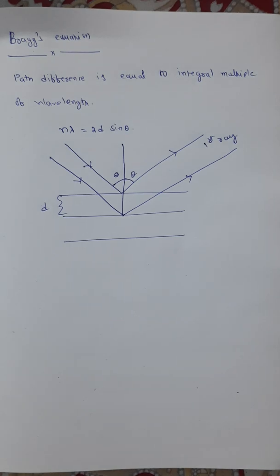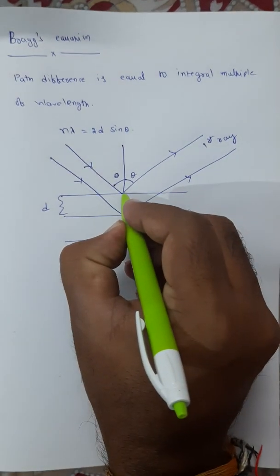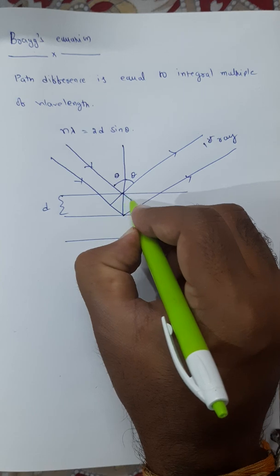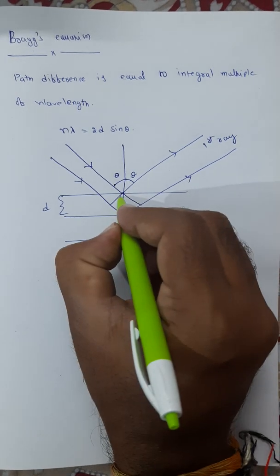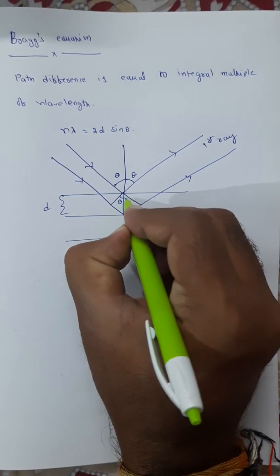Let us draw the normals. These normals are making an angle theta with the incident ray and reflected ray.